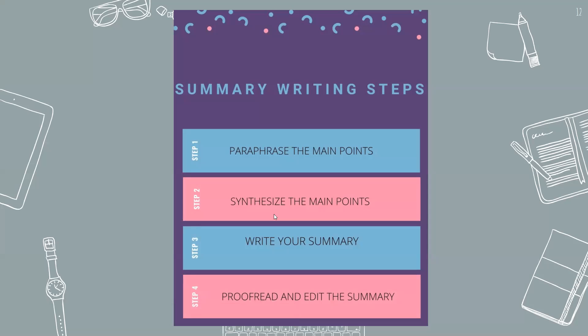Step number one: now that you have extracted the main points, rewrite them in your own words. Rewriting in your own words while retaining the original meaning can create greater clarity for both the writer and his or her audience. This is, in fact, the skill of paraphrasing. So in step number one, you're going to paraphrase your main points. We've spoken about reading and comprehension, which is what you do as soon as you have your piece of writing to summarize — you read it, try to understand it, identify the main points, and then rewrite them, paraphrasing the main points of the original text.